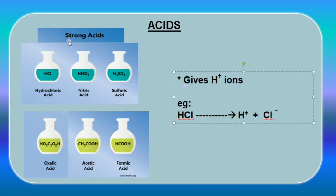Acids can be classified into strong acids and weak acids. Examples of strong acids are hydrochloric acid, nitric acid, and sulphuric acid. Examples of weak acids are oxalic acid, acetic acid, and formic acid.